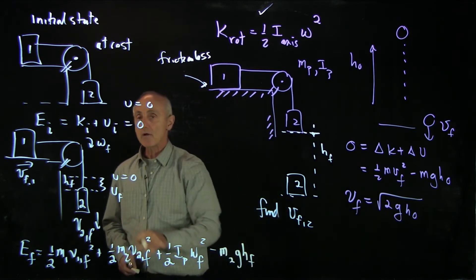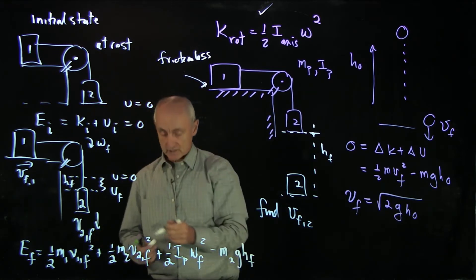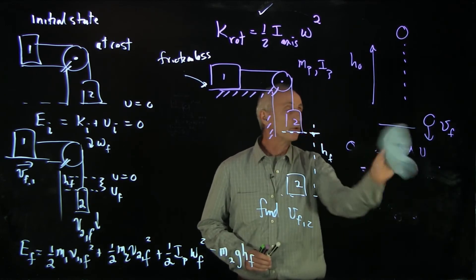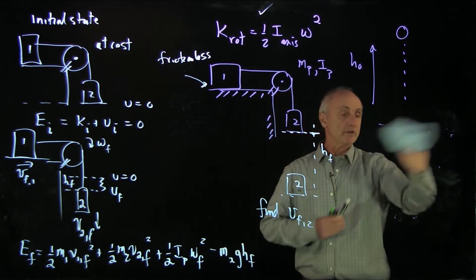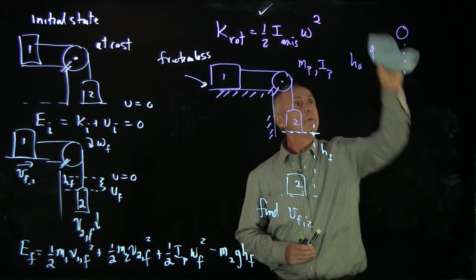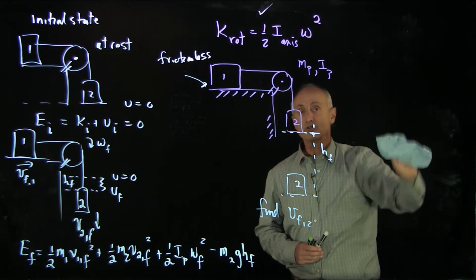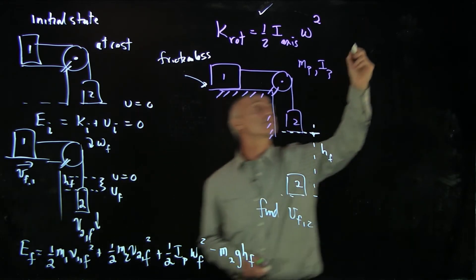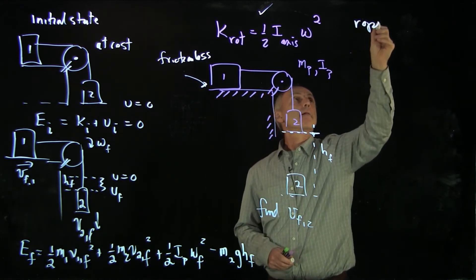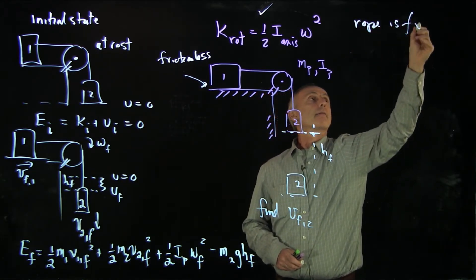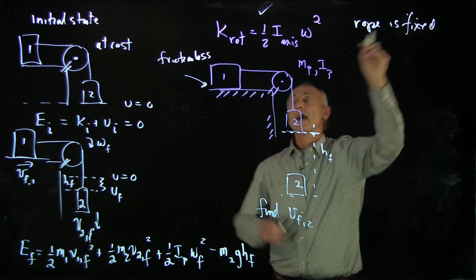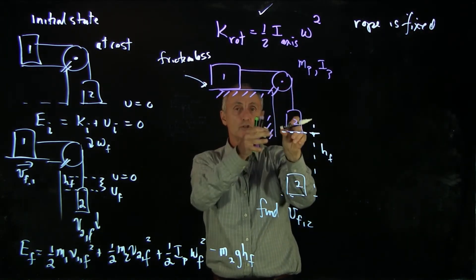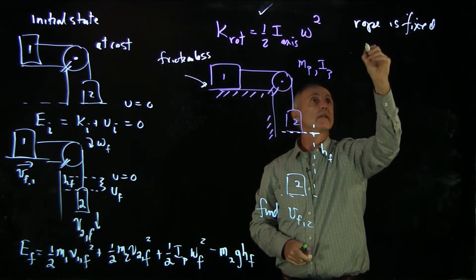Now we have our two energy states. What we'd like to consider is to apply the energy principle just like we applied it for this simple case. But before we do that, there is a constraint condition that because the rope is fixed in length, as block 1 moves, the pulley is rotating and block 2 is moving.